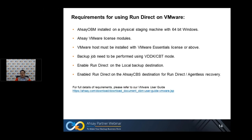What are the requirements for running RunDirect on VMware? OBM must be installed on the physical staging machine with 64-bit Windows. You need the RCA VMware license modules, and the VMware host must be installed with a VMware Essentials license or paid license. The backup job needs to be performed using VDDK CBT mode, and you need to enable RunDirect on the CBS destination for agentless recovery. For full details of requirements, please refer to our VMware users' guide on the link below.